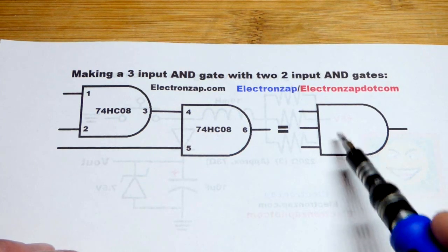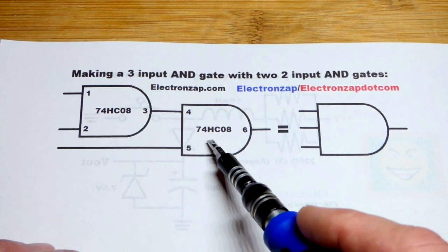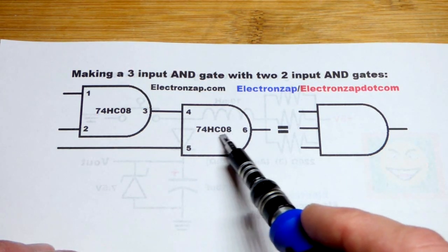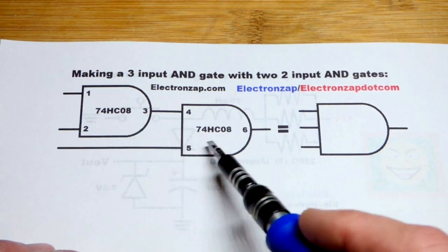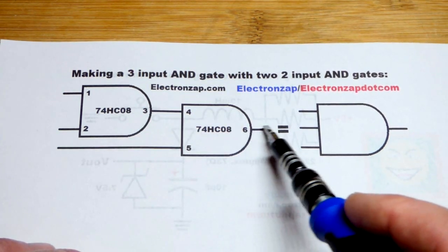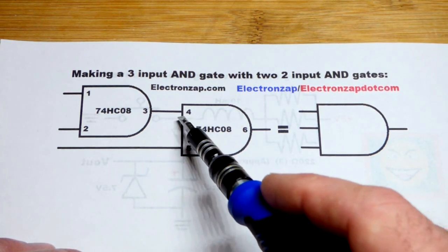If we need a three input AND gate, but all we have are two input AND gates, such as what's on the 7408, we can just combine them like you see here. So we'll have the output of one of the AND gates and one of the inputs just getting a regular signal.